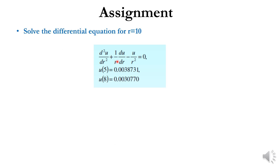Now you can do an assignment. We are given a second-order differential equation with boundary conditions. Solve this equation for r equal to 0 — first find the initial value corresponding to z of x0 where z is equal to du/dr. Then solve using the Euler or Runge-Kutta method for r equal to 10.